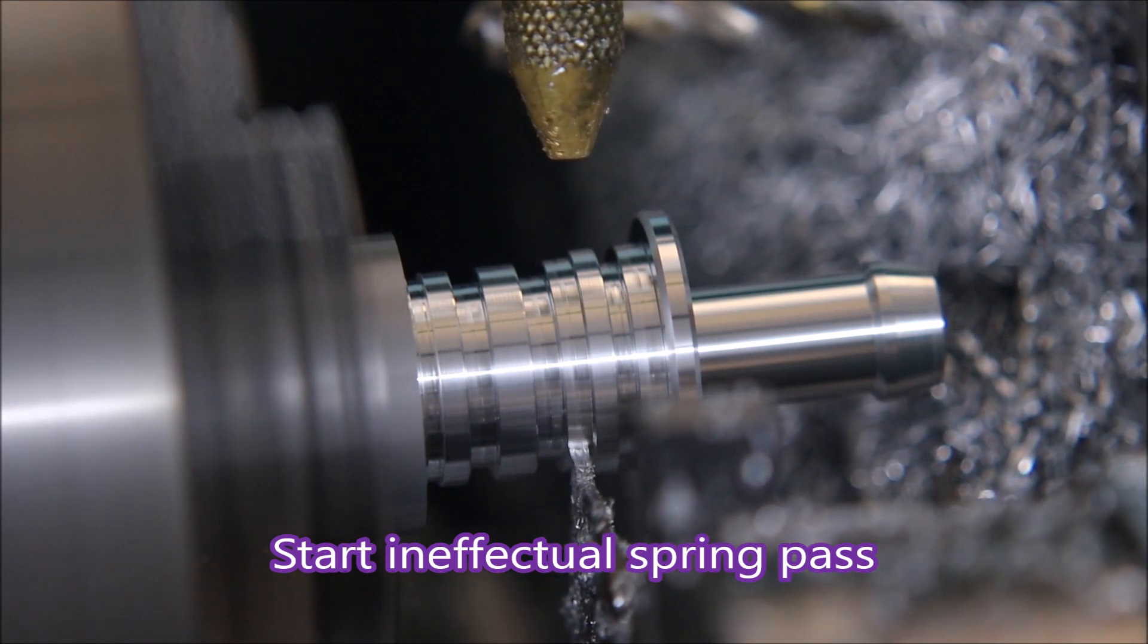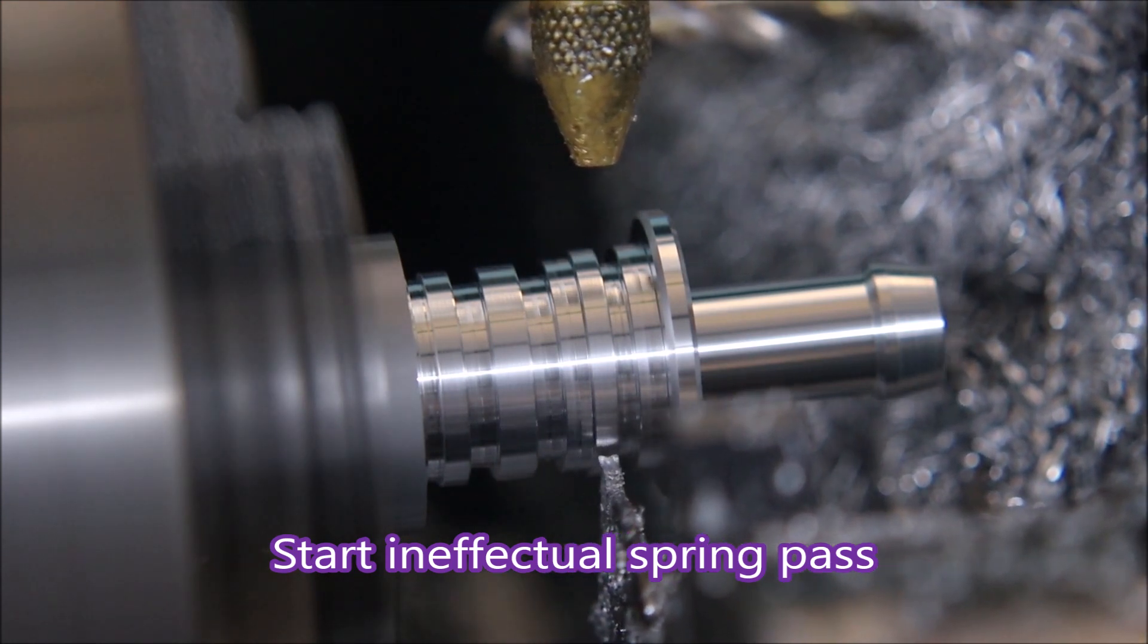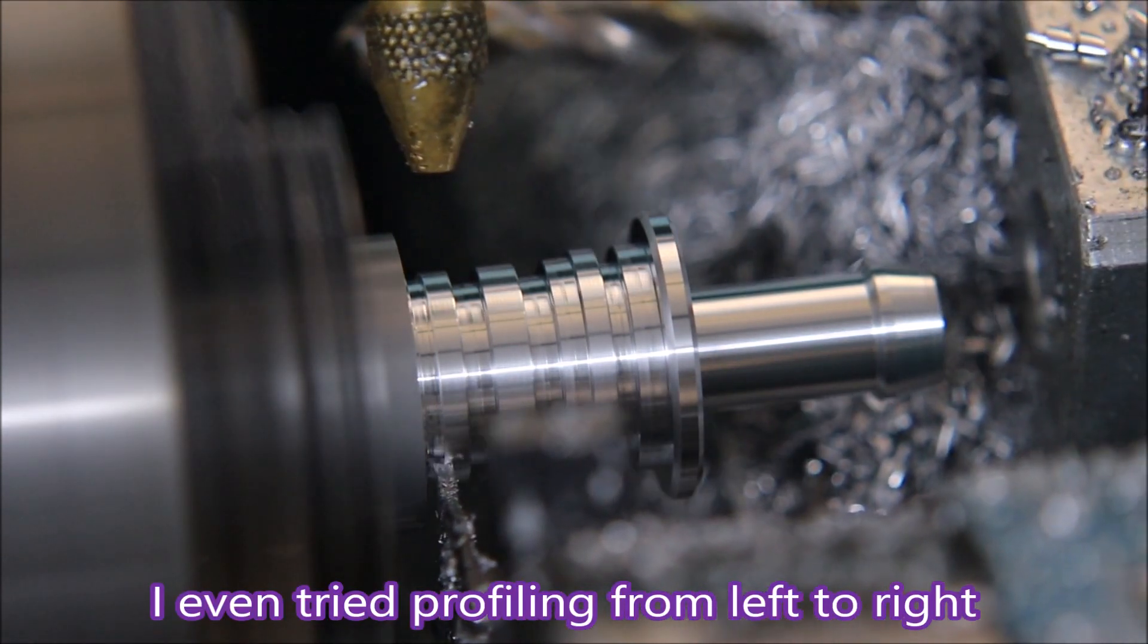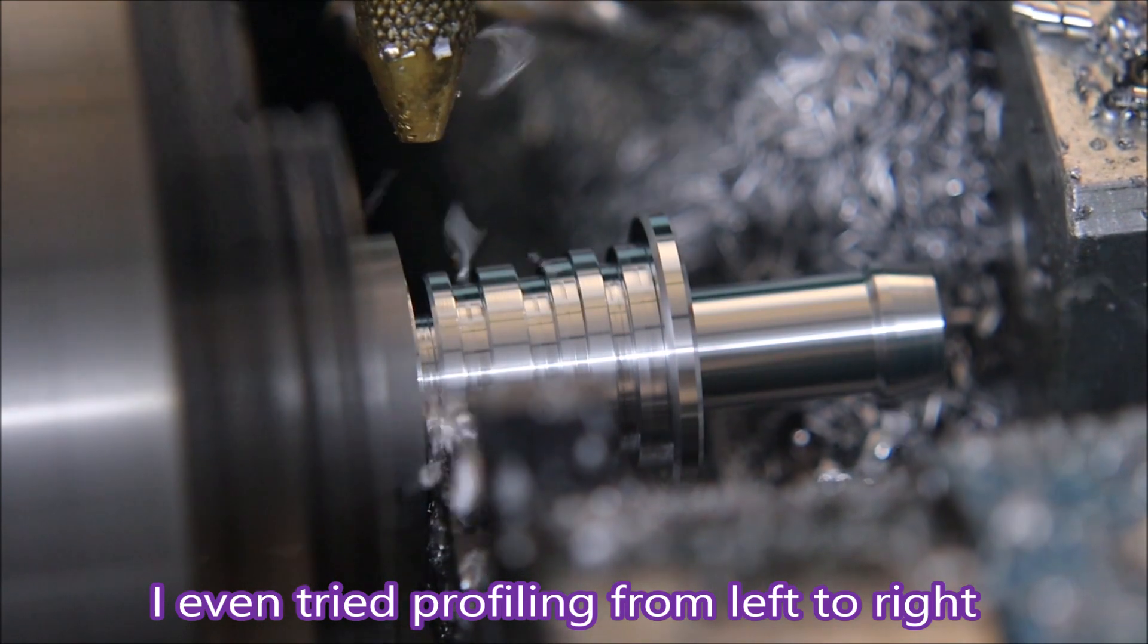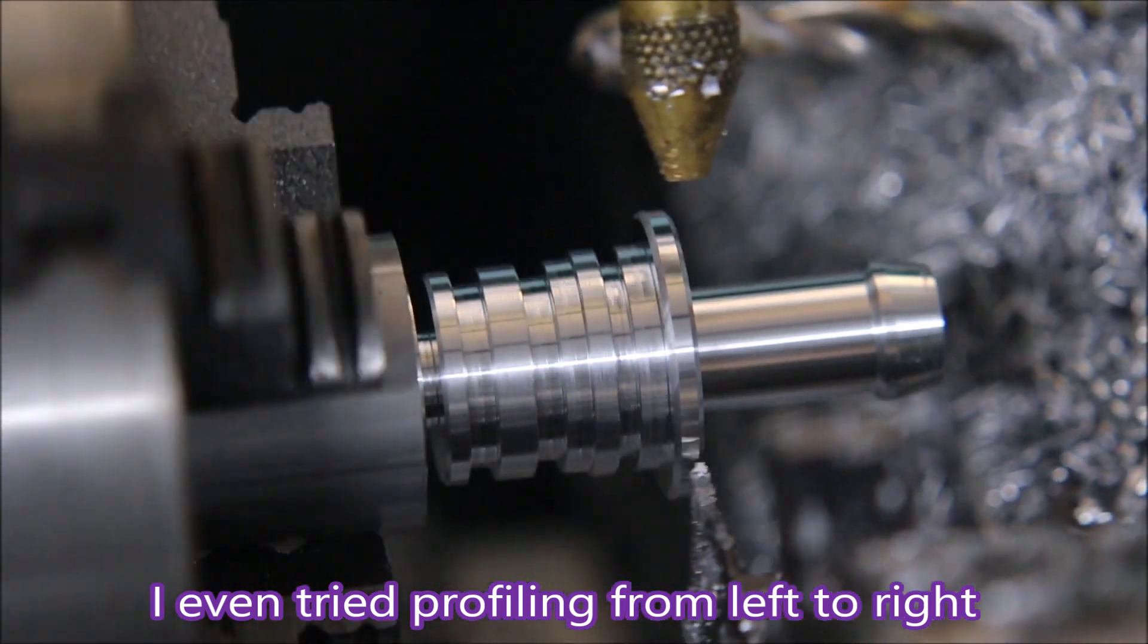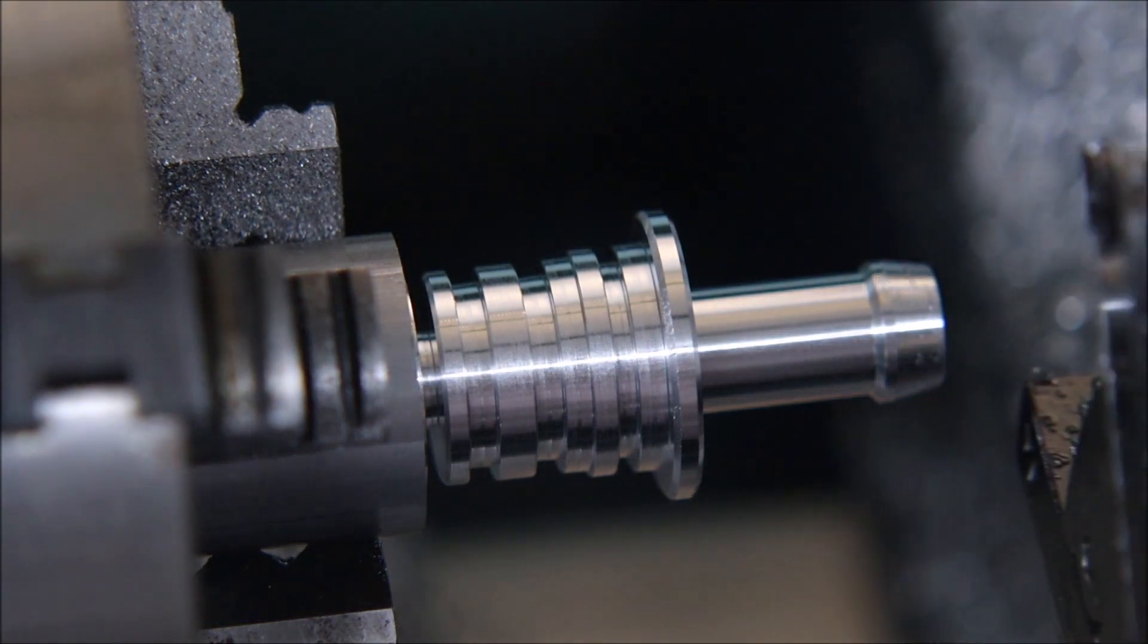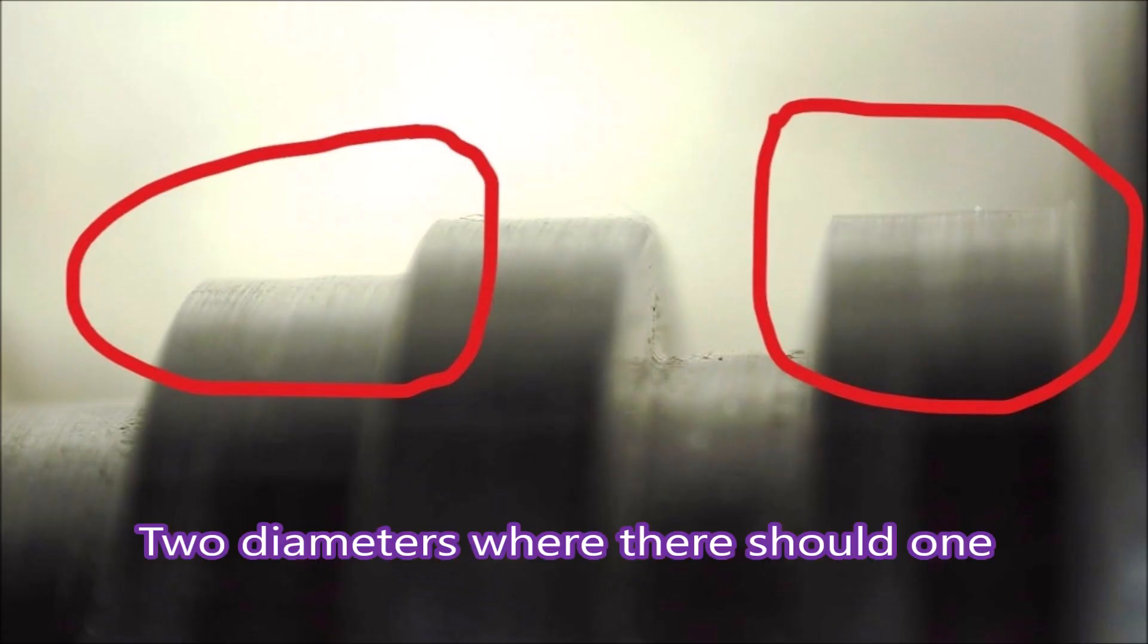Now I went backwards in the opposite direction, thinking that would help clean it up, but it didn't. Not only that, when I made the spring pass - actually more of a cutting pass - it still didn't clean it up. It still had that weird-looking effect and 0.05 difference in diameters, which is just ridiculous.